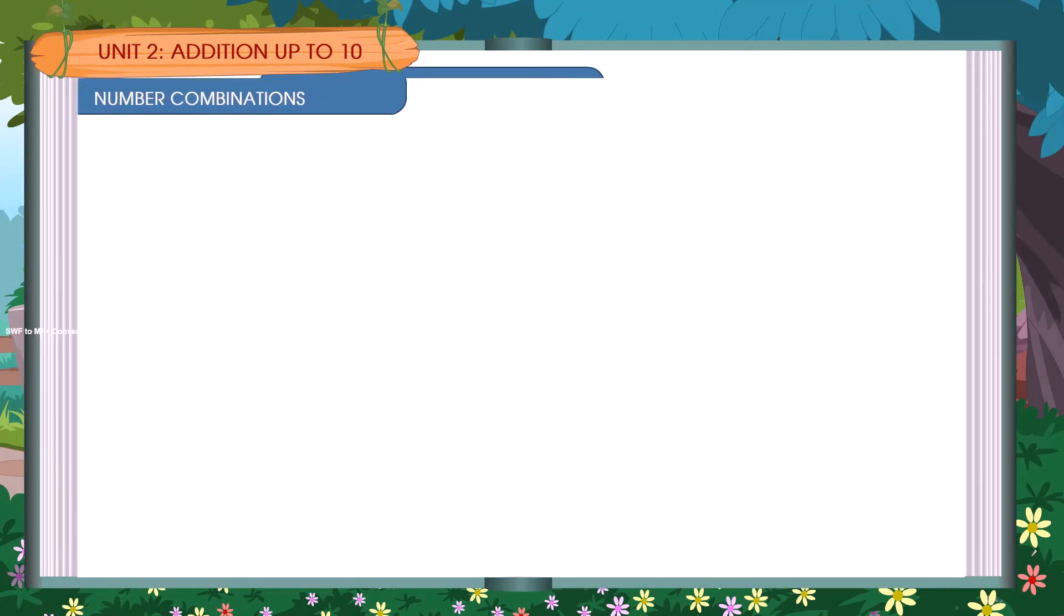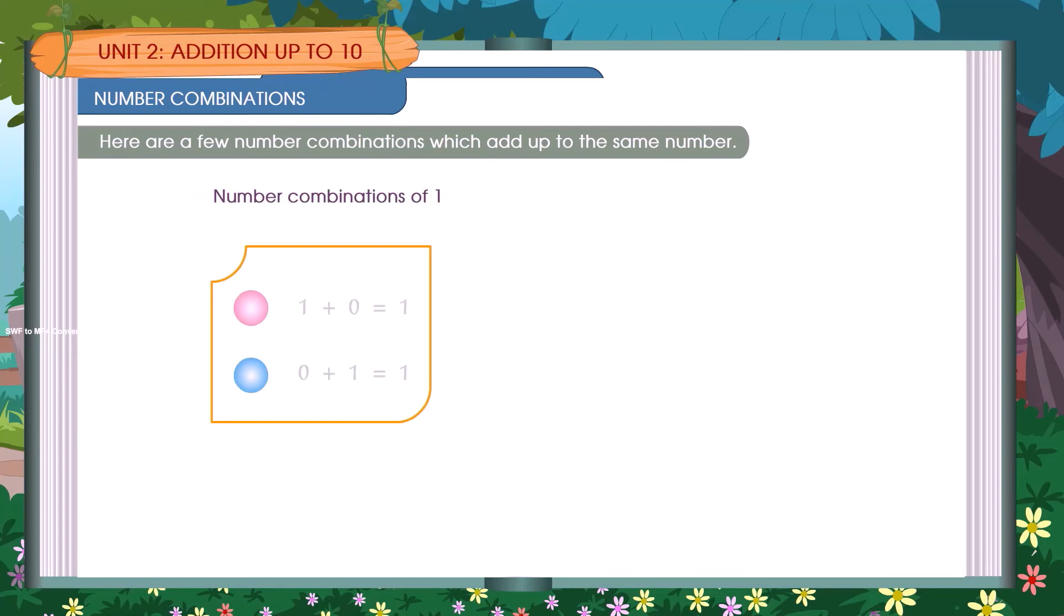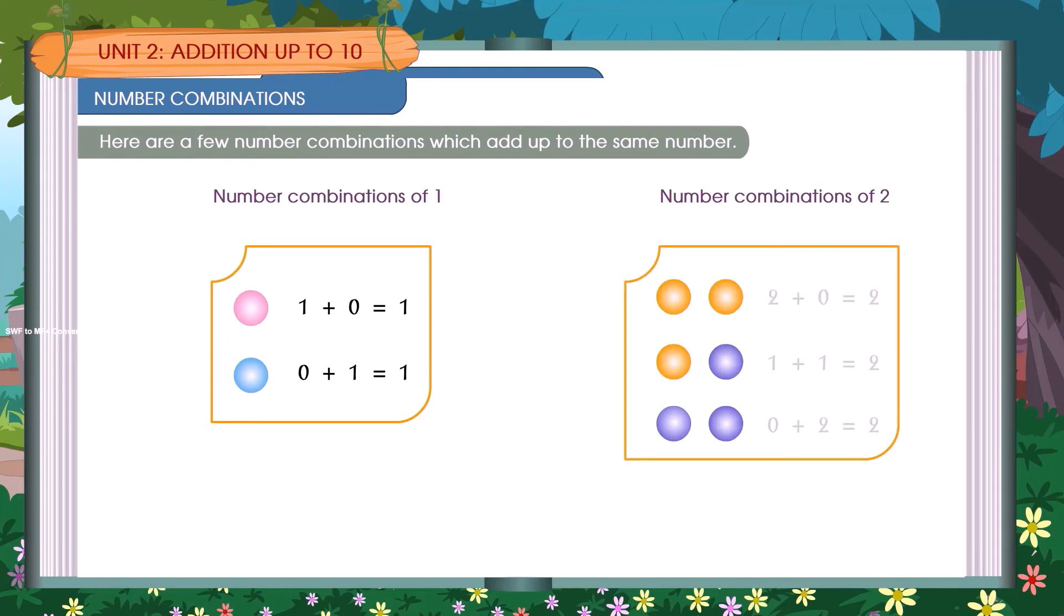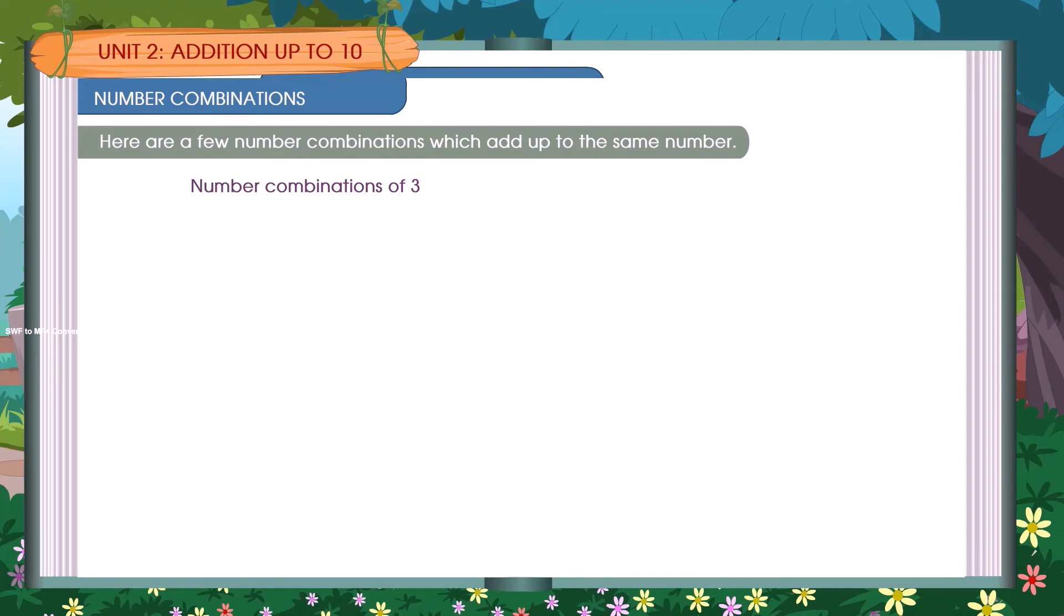Number combinations. Here are a few number combinations which add up to the same number. Number combinations of 1: 1 plus 0 is equal to 1, 0 plus 1 is equal to 1. Number combinations of 2: 2 plus 0 is equal to 2, 1 plus 1 is equal to 2. Number combinations of 3: 3 plus 0 is equal to 3, 2 plus 1 is equal to 3, 1 plus 2 is equal to 3, 0 plus 3 is equal to 3.